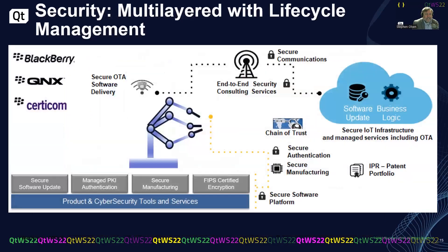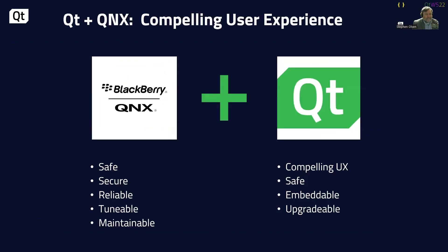Looking at the software lifecycle, you want to be able to take the device, authenticate it, have it authenticate the cloud, and once that communication is established, bring down a new software load onto the system. To summarize what we've talked about today: make sure your system is safe, secure, reliable, tunable, and maintainable — all while providing a compelling user experience that is safe, embeddable, and upgradable. Thank you.